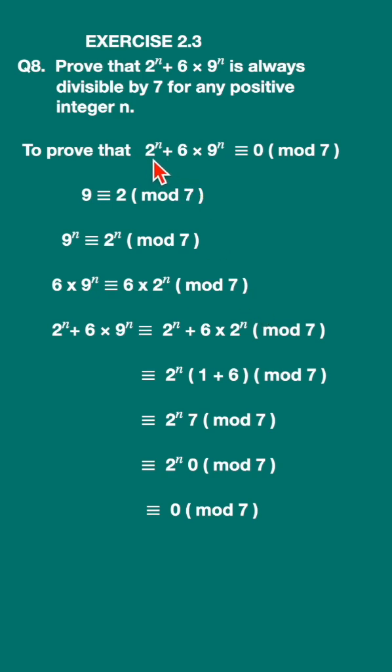Then we want to add 2 raised to n. So add here LHS 2 raised to n. Similarly, on the RHS you should add here also. 2 raised to n.